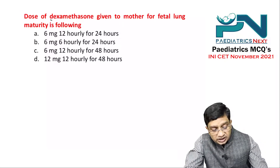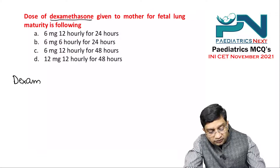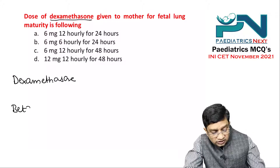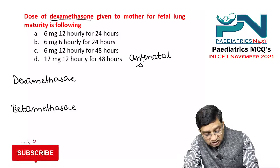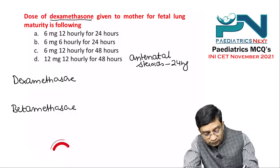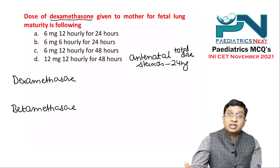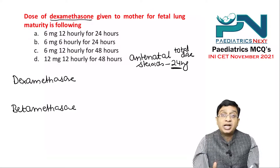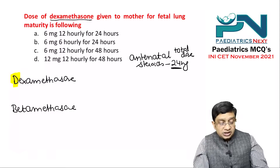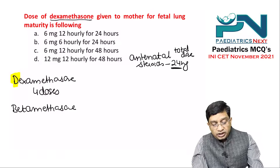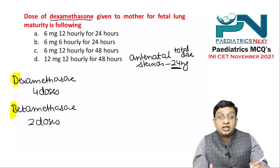The next question: the dose of dexamethasone given to the mother for fetal lung maturity. This is a simple question every student should get correct. You can give dexamethasone or betamethasone as antenatal steroids. The total dose to give is 24 mg over a span of 48 hours. A mnemonic: dexamethasone is the fourth letter in ABCD, so four doses are given; betamethasone is the second letter, so two doses are given — but the total remains 24 mg over 48 hours.